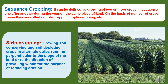Sequence cropping can be defined as growing of two or more crops in sequence one after another during the year on the same piece of land. On the basis of number of crops grown they are called double cropping, triple cropping, etc.